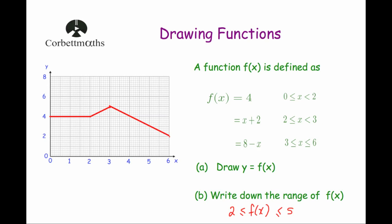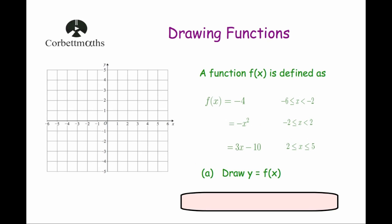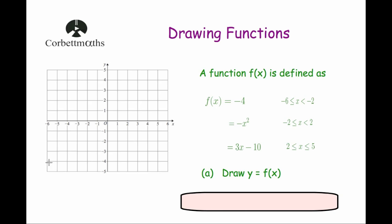Our next question gives another function to draw. A function f of x is defined as f of x equals minus 4 for values of x bigger than or equal to negative 6 but less than negative 2. So it's going to be a flat line — negative 4 from negative 6 across to negative 2.